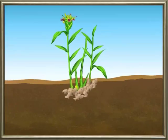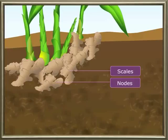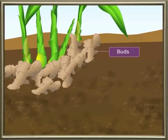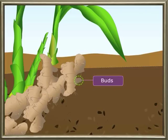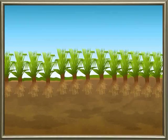In ginger, the stem grows horizontally in the ground. Nodes and some scales are found in the stem, and finger-like projections called buds arise from it. If a piece of ginger along with the bud is planted in the soil, it develops into a new plant.